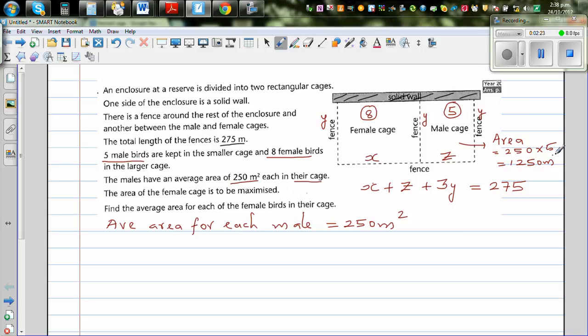This is a technique I am showing you to break the information into equations and numbers. Now the area of the female cage is to be maximized. We want to maximize this area. So area in general form for this would be A equals X times Y, and we want to maximize this area.